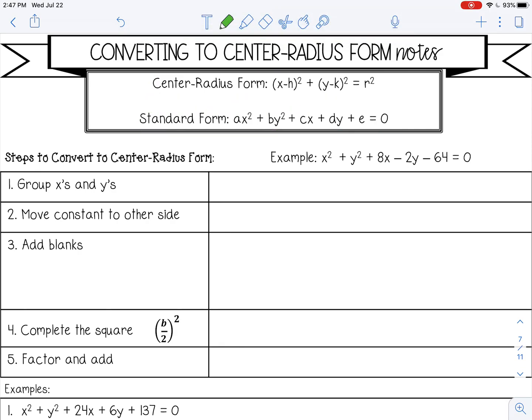Here's an example of standard form. The first thing you want to do is group your x's and your y's. So I'm going to start with my x's: x squared plus 8x, and then my y's: y squared minus 2y, and then bring down my constant, my equals, and my zero.